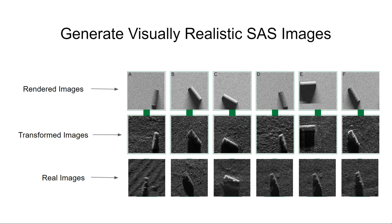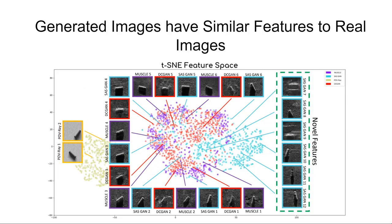Here we show the rendered approximate SAS images in the first row, and in the second row the result of the GAN transforming the images to look more SAS realistic, while preserving the content of the rendered scene. We show real SAS images in the third row for reference. In the full paper, we explain that many of our generated images reside in a nearby feature space of the images of real SAS data. Thus, we propose that these images have the potential to enrich existing SAS data sets and increase the performance of neural networks for object detection and classification tasks on SAS images.